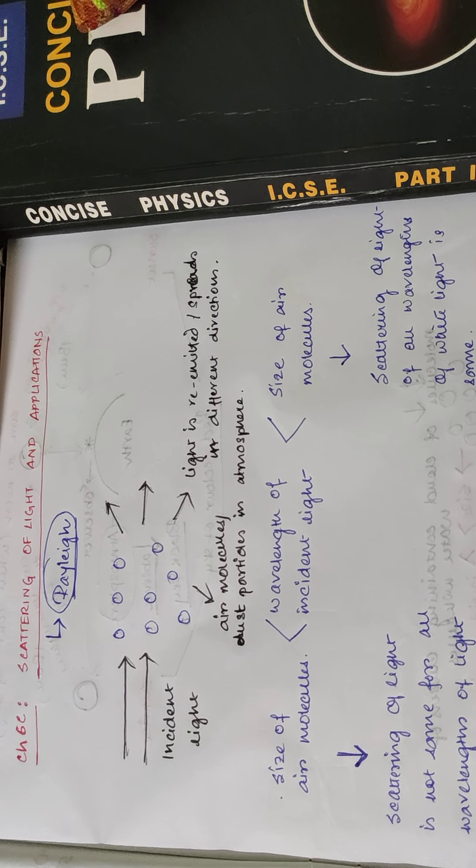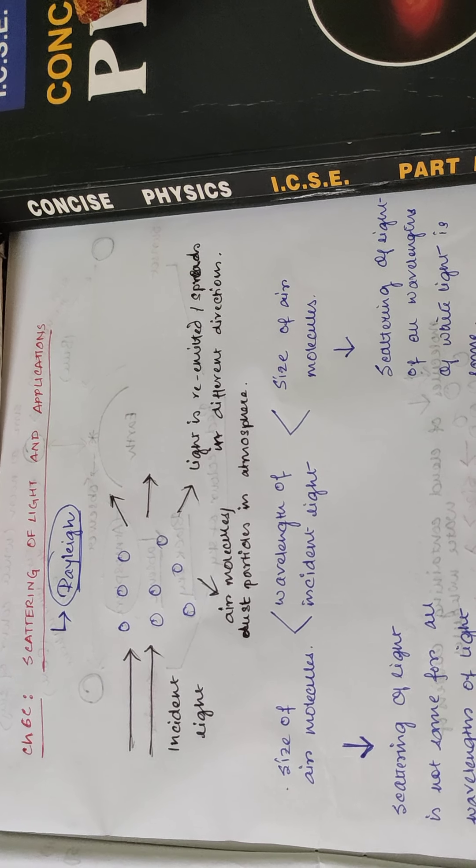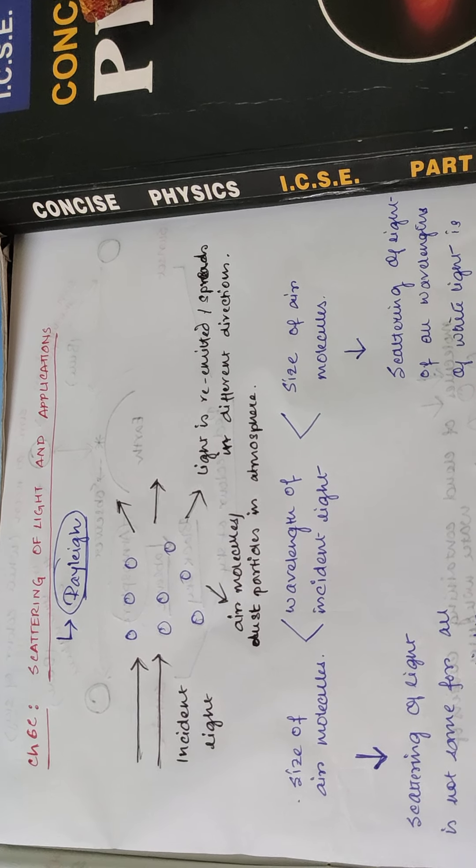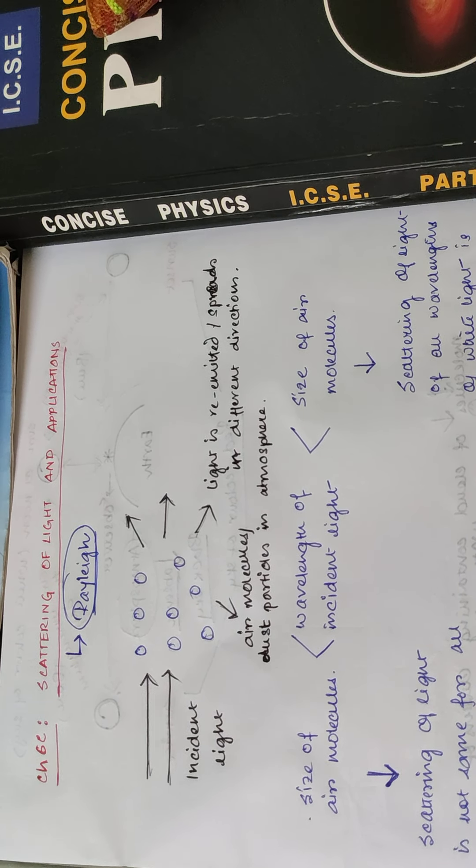Good afternoon class 10. In this video we will study chapter 6C, that is scattering of light and its various applications. The scattering of light basically means the spreading of light in various directions. When light is incident on air molecules or dust particles in the atmosphere, they absorb the incident light energy and then re-emit the light in various directions. This is the phenomenon of scattering.